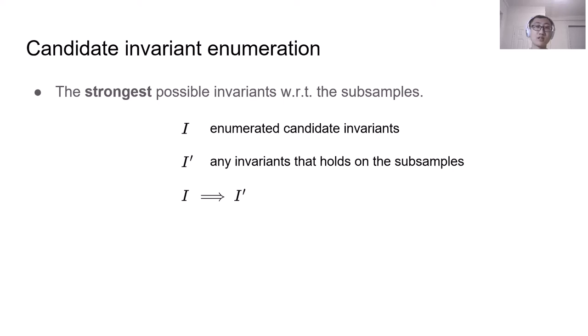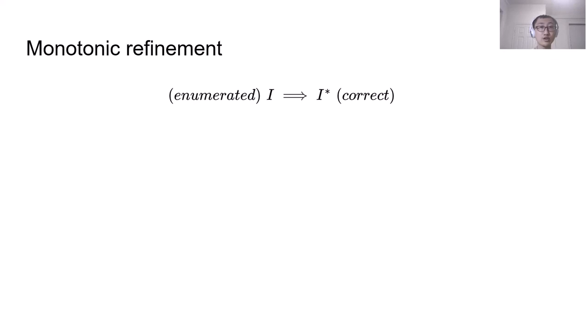After enumeration, we feed the candidate invariants to Ivy. If the safety property is proved, then we are done. If not, we enter the third module, monotonic refinement.